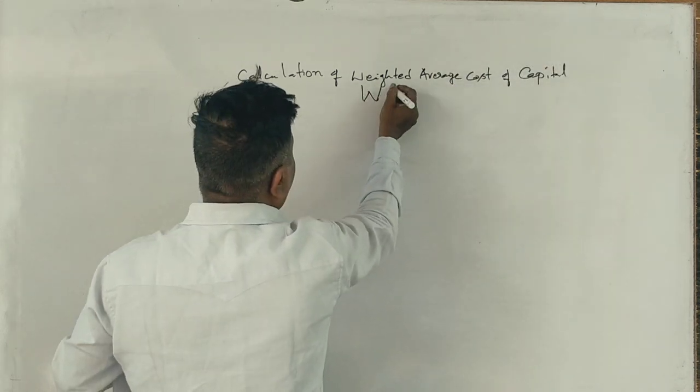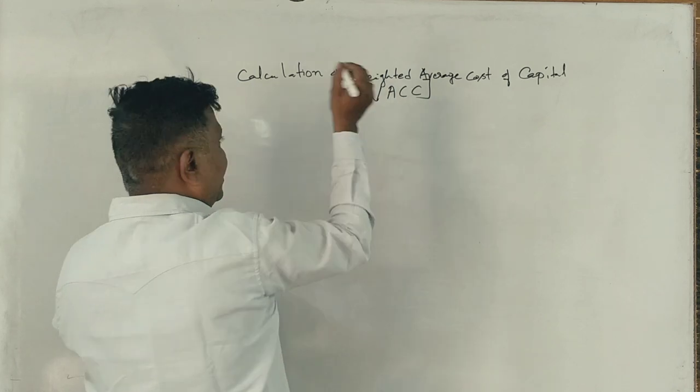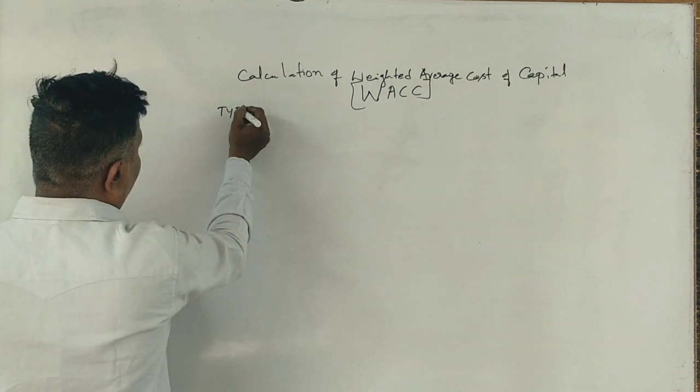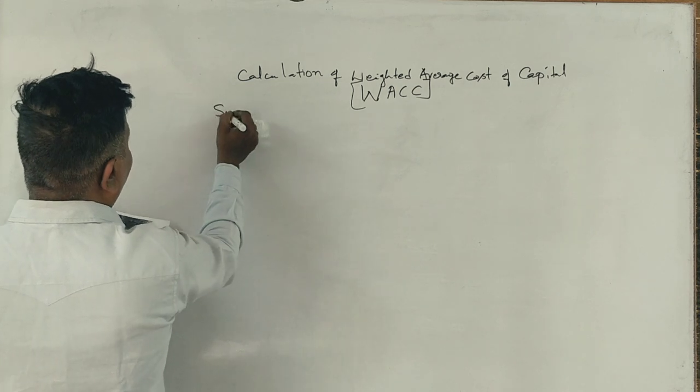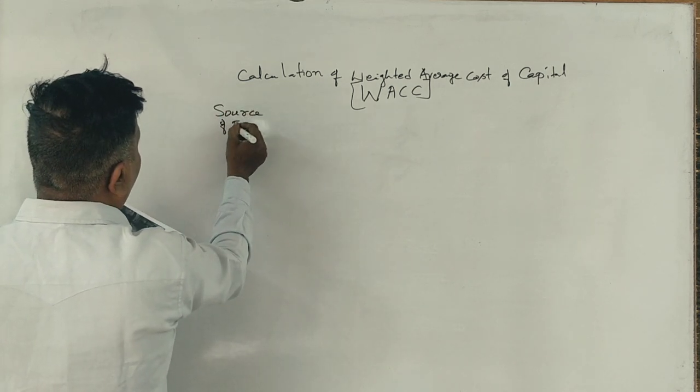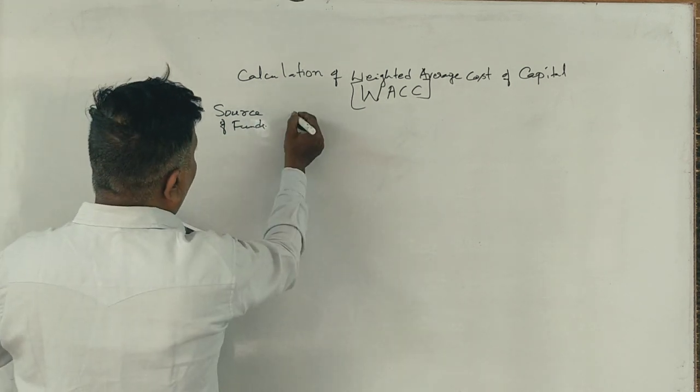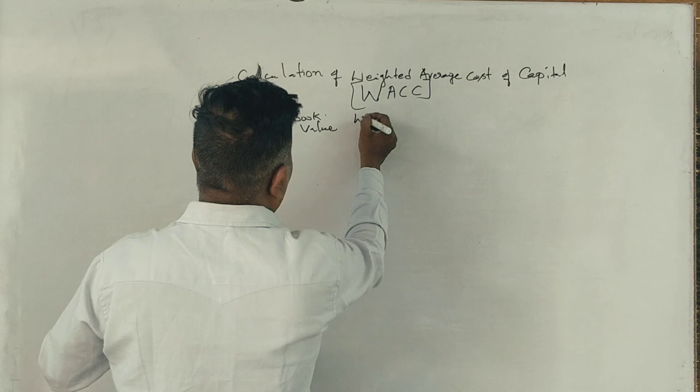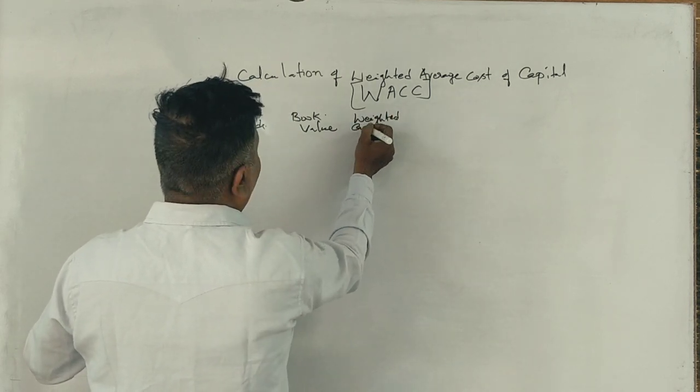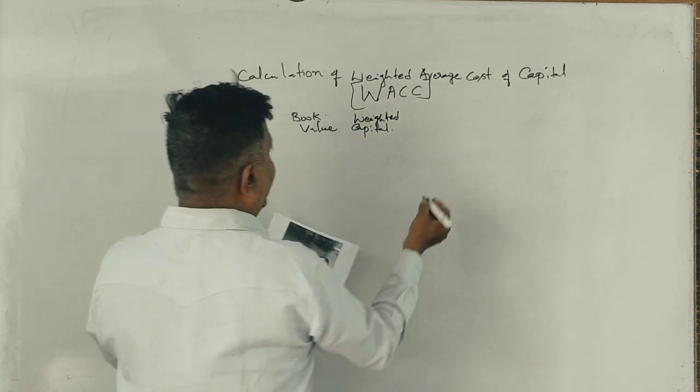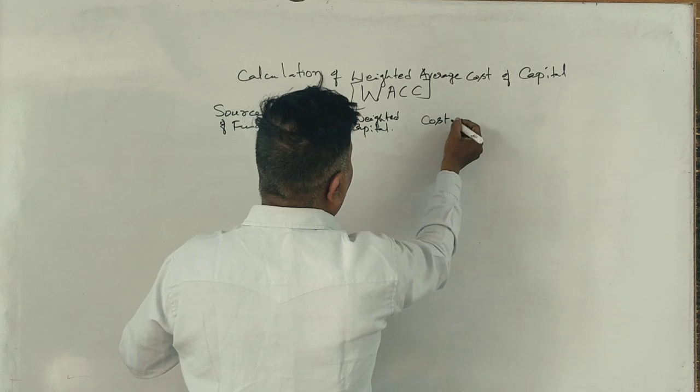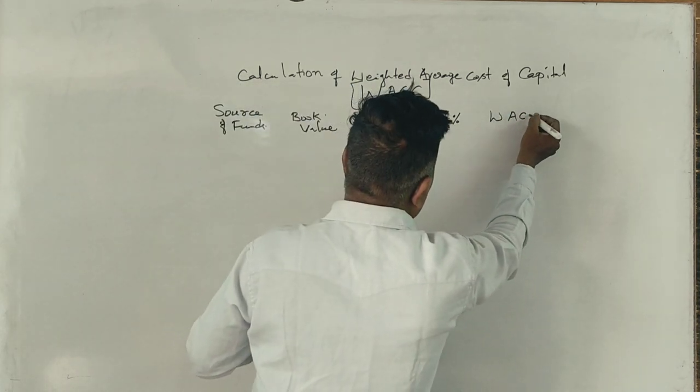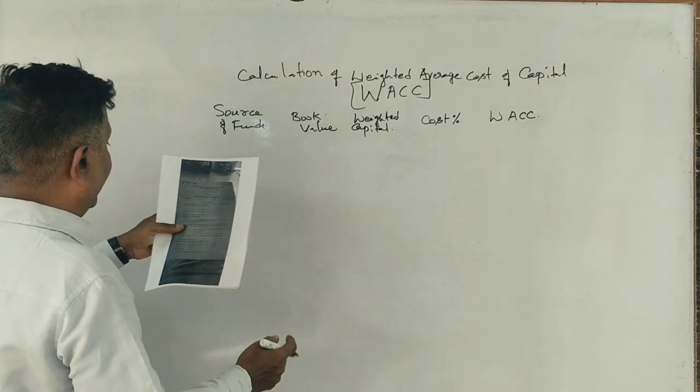Calculation of weighted average cost of capital, WACC. First, we have to calculate type of capital, source of funds. Next, book value. Next, weighted capital. Next, cost of capital in percentage. Next, weighted average cost of capital.